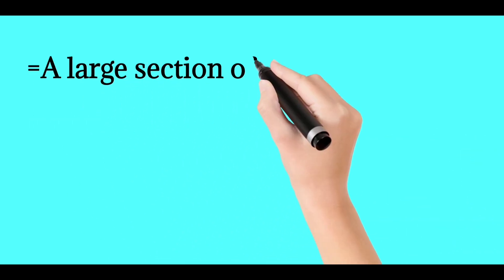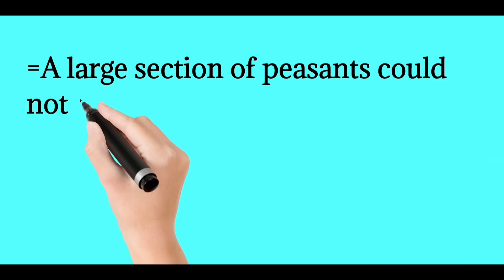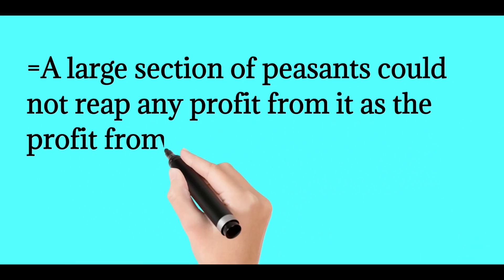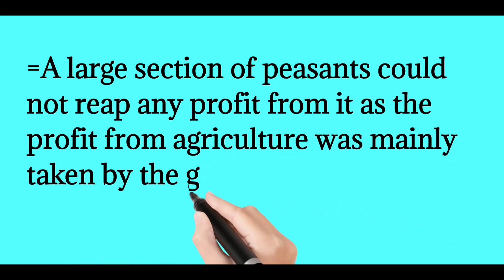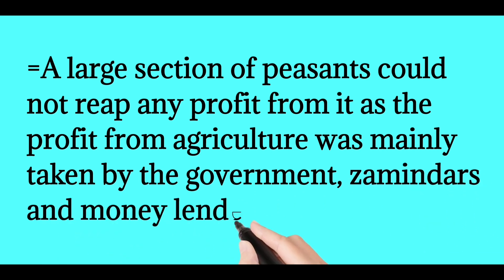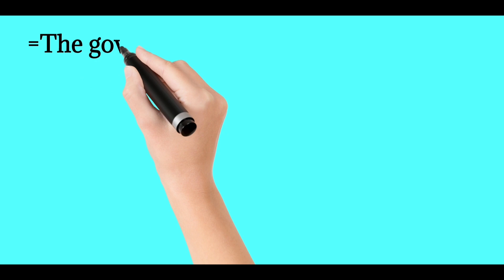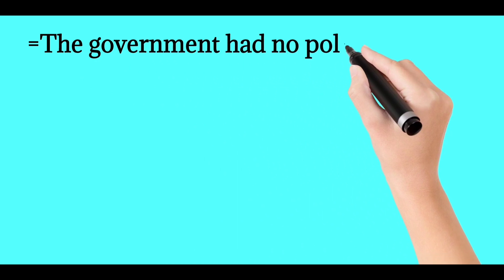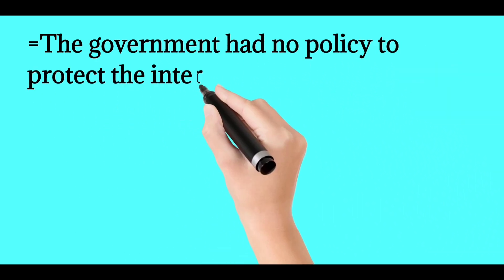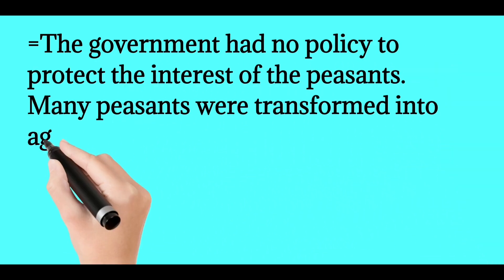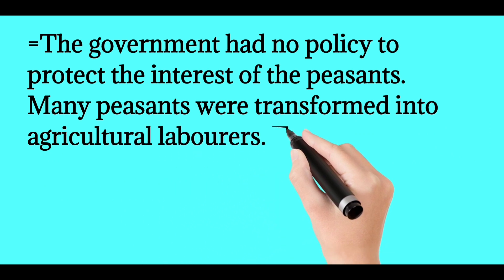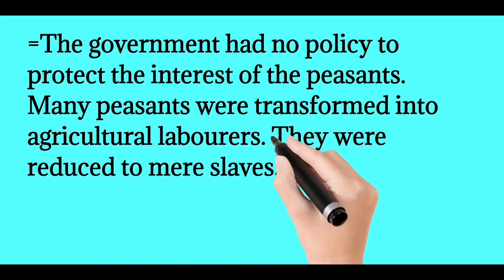A large section of peasants could not reap any profit from it, as the profit from agriculture was mainly taken by the government, zamindars, and moneylenders. The government had no policy to protect the interest of the peasants; many peasants were transformed into agricultural laborers and were reduced to mere slaves.